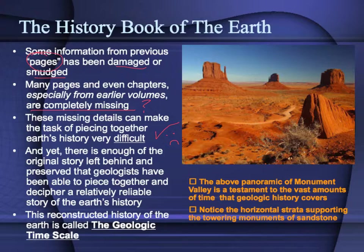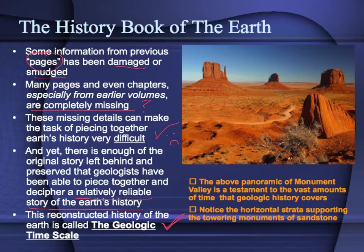However, there is hope. There is enough of the original story preserved in rocks that geologists have been able to piece together and interpret what we think is a relatively reliable story of Earth's history. We call this the geologic time scale. This geologic time scale is subdivided into different eons, eras, periods, and epochs — getting subsequently smaller and smaller time divisions when we know enough detail.